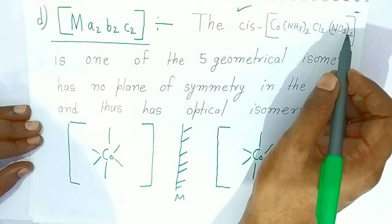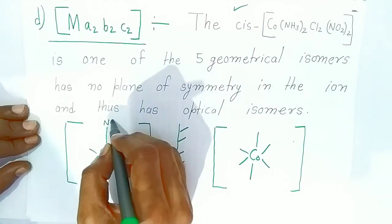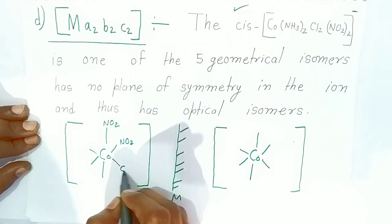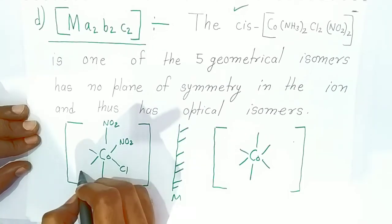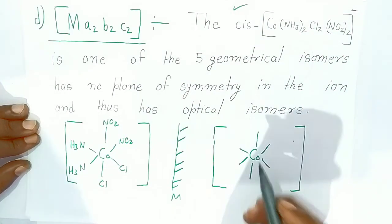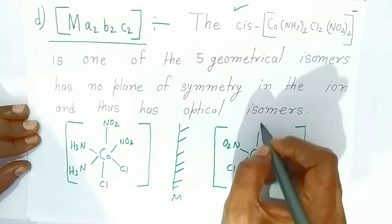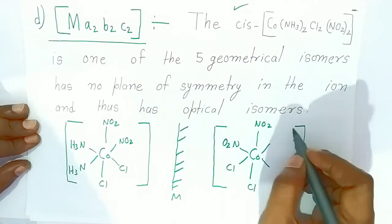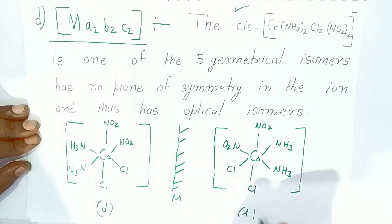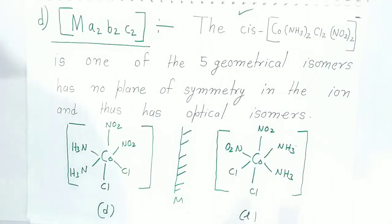With two ammonia, two chloride, and two nitro groups: for the cis form, nitro/nitrogen is placed on this side, adjacent chloride goes here, and ammonia is placed on this side - this is the cis arrangement. The mirror image shows NO₂ on the opposite side, chloride stays, and the ammonia rearranges accordingly. This gives the dextro isomer on one side and the levo isomer on the other. These are very important for examinations.